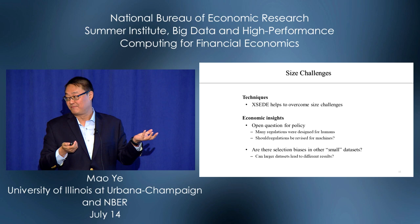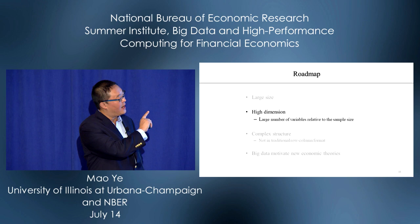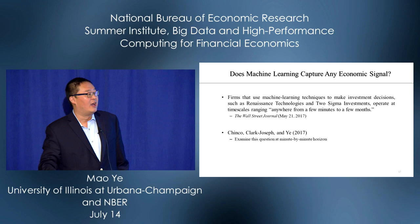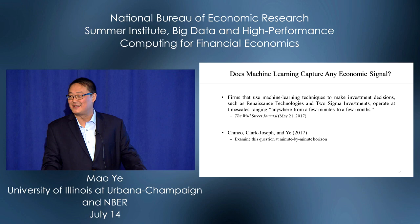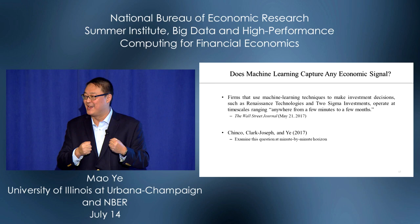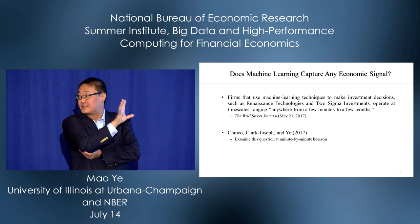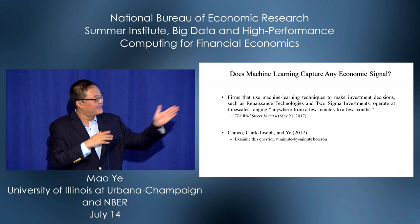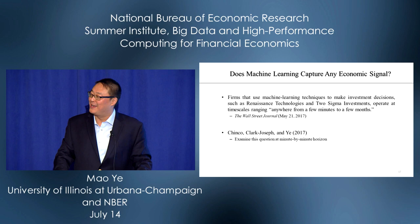Next, I want to talk about high dimension — a large number of variables relative to the sample size. Big data and machine learning are buzzwords on Wall Street. Firms like Renaissance Technologies use machine learning techniques to make investment decisions with horizons ranging from a few minutes to a few months. The question is: do the shortest-horizon guys — minute by minute — track any economically meaningful signal?